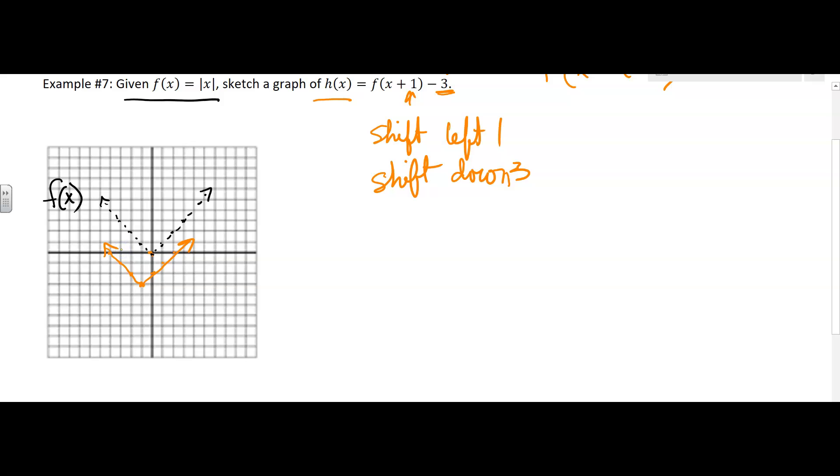You can draw it a little bit better than I can, but that's what it looks like. The whole graph—it's not changing the shape, it's just taking all the points and moving each one of those points to the left one and down three. The book does it in two steps. I prefer to just do it in one, but I'll leave that up to you.